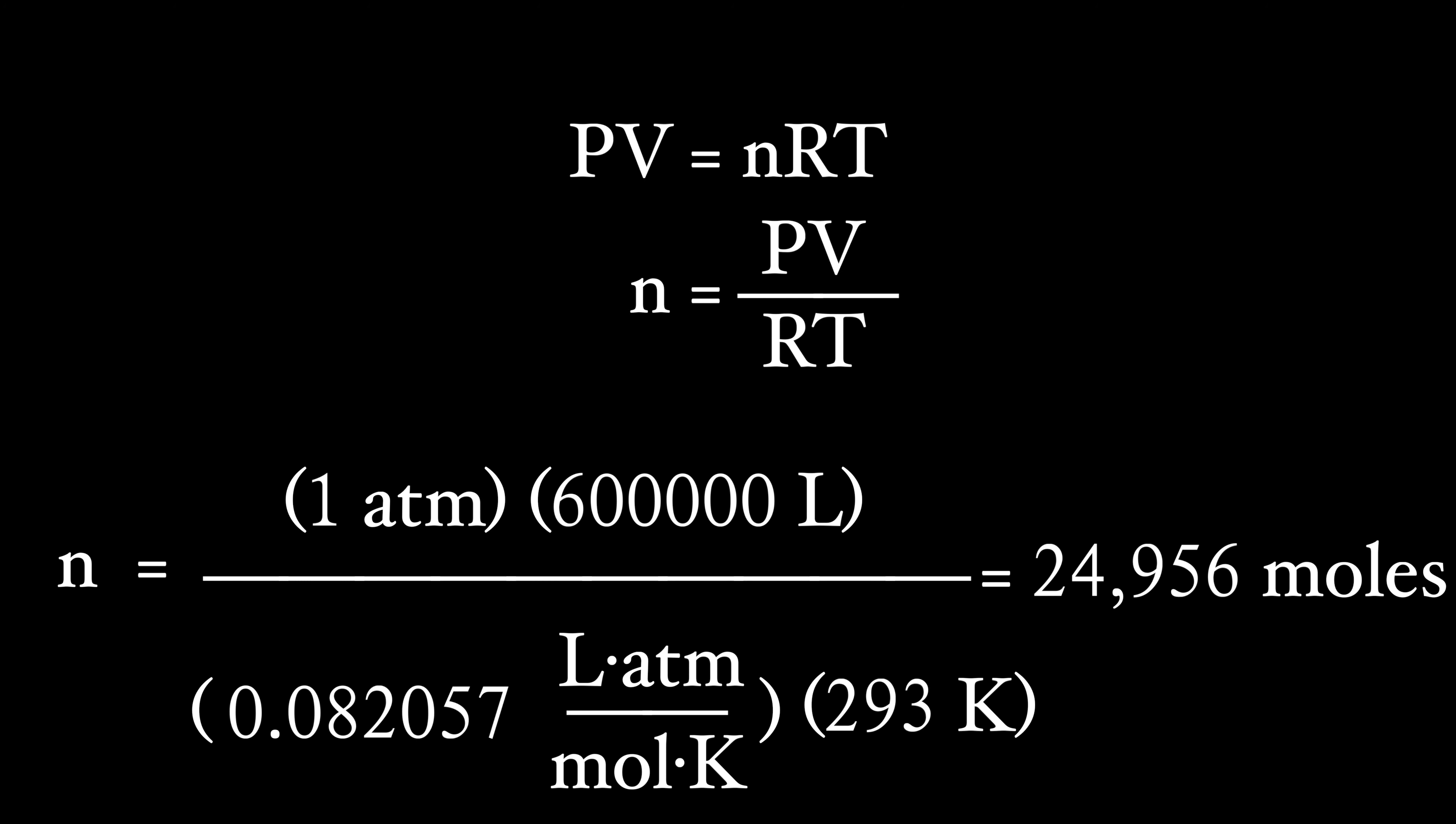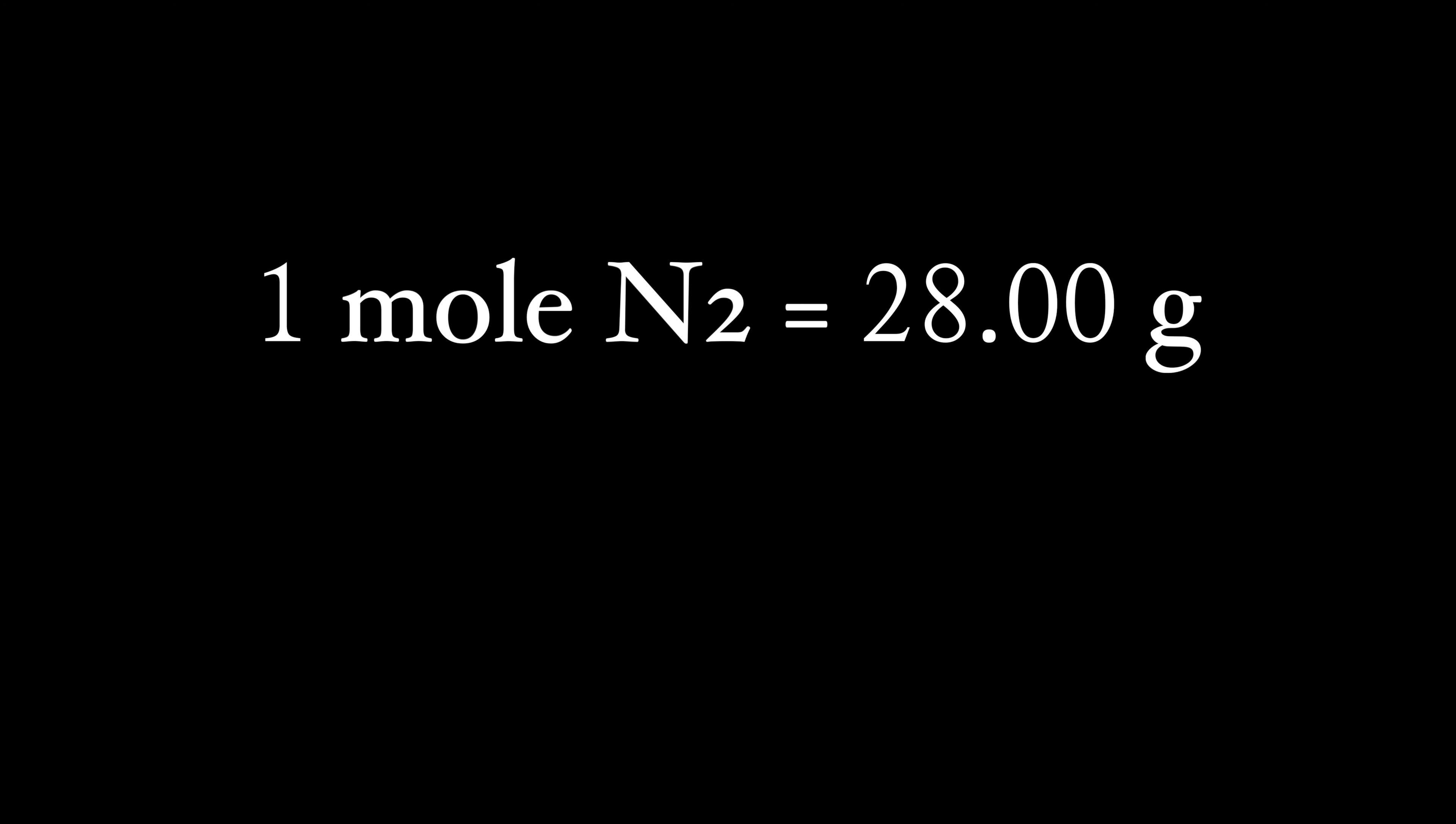Rewrite the ideal gas law in terms of n. Now, plug in all the numbers into the equation. There are 24,956 moles of nitrogen gas. Since 1 mole of nitrogen is 28 grams, there are 698,757 grams of nitrogen gas.